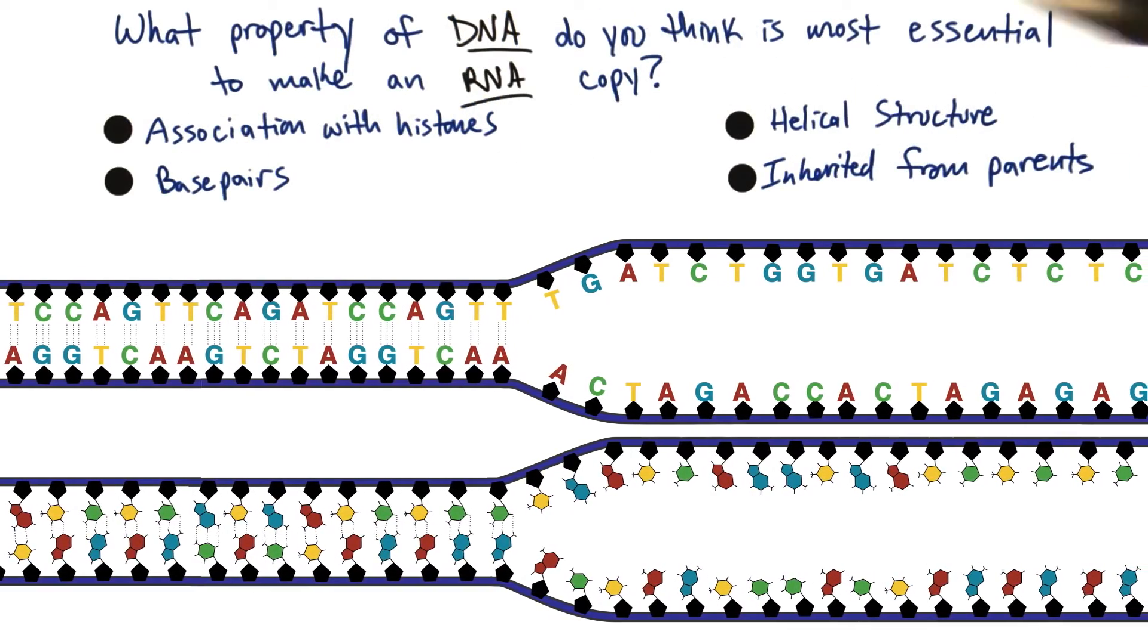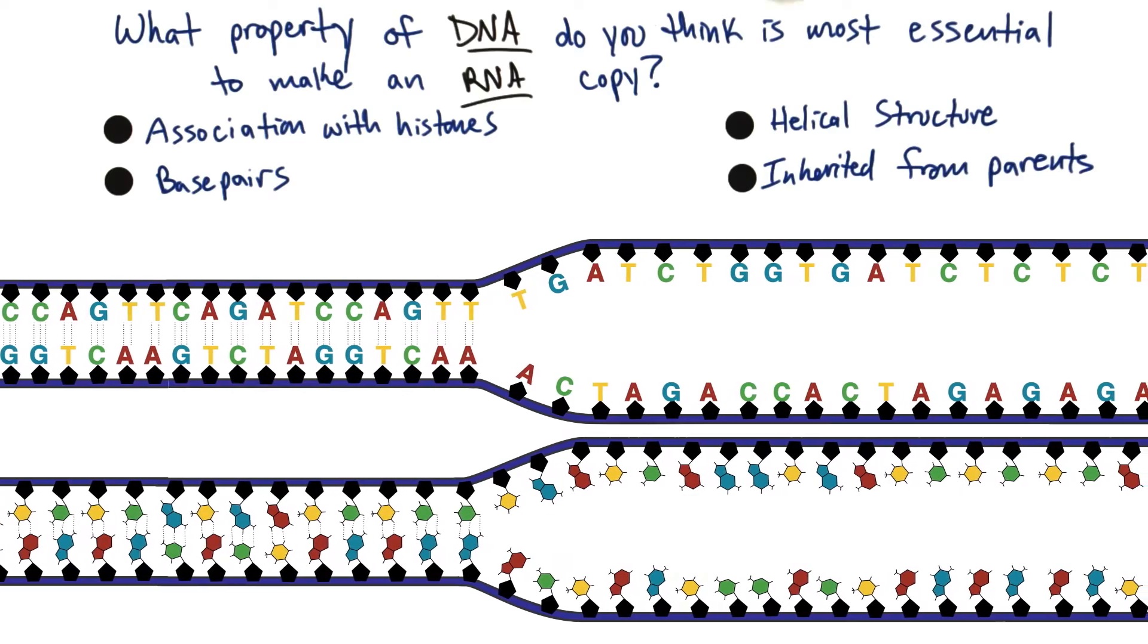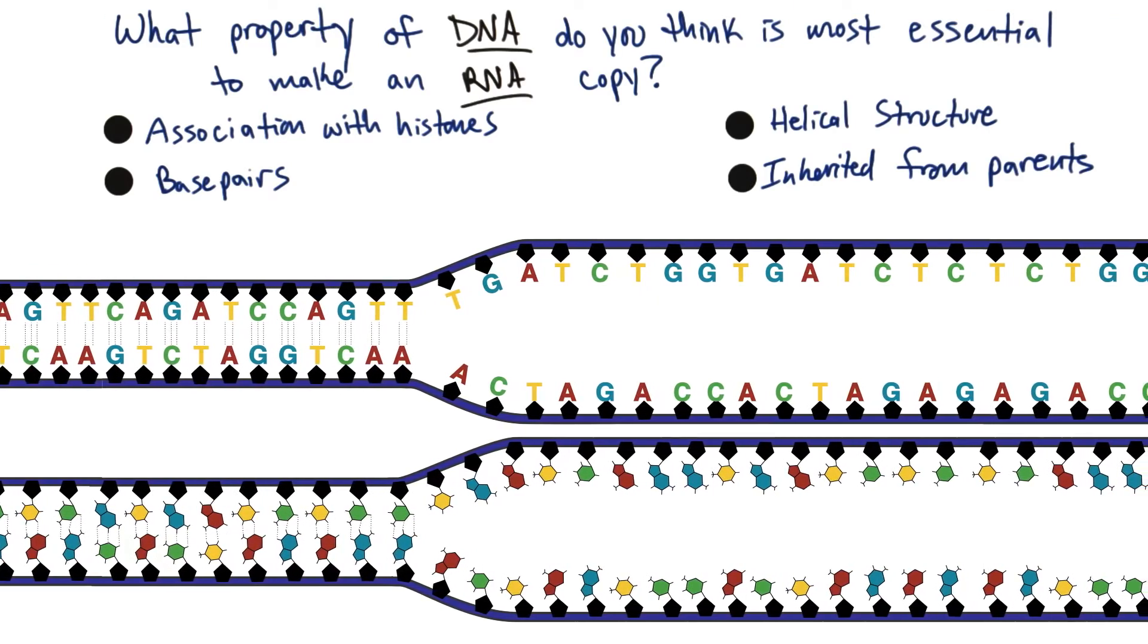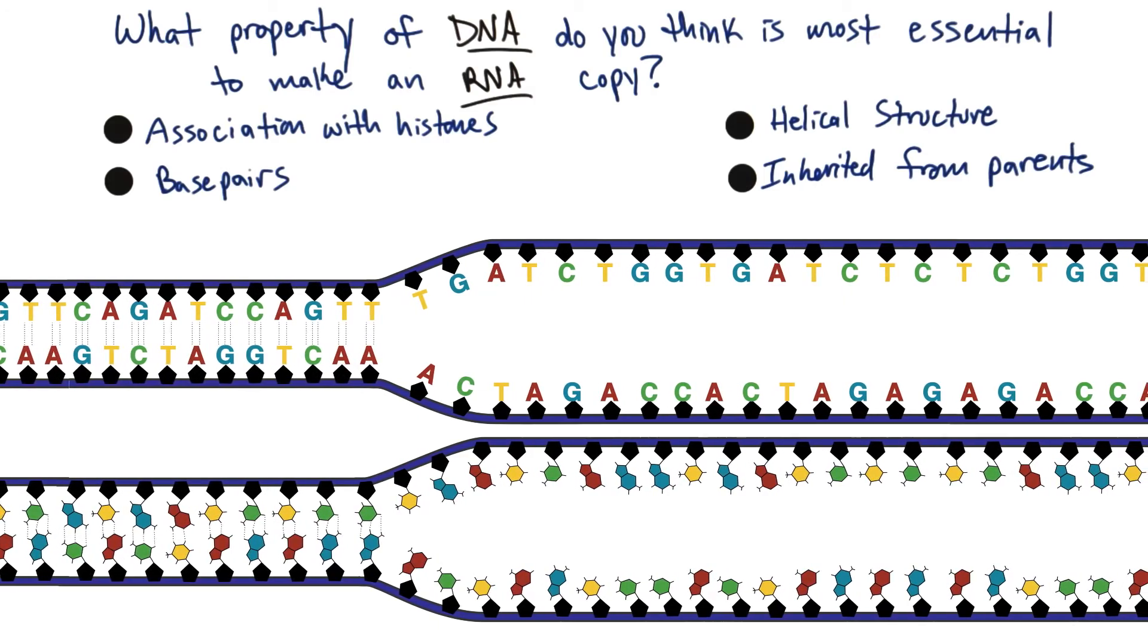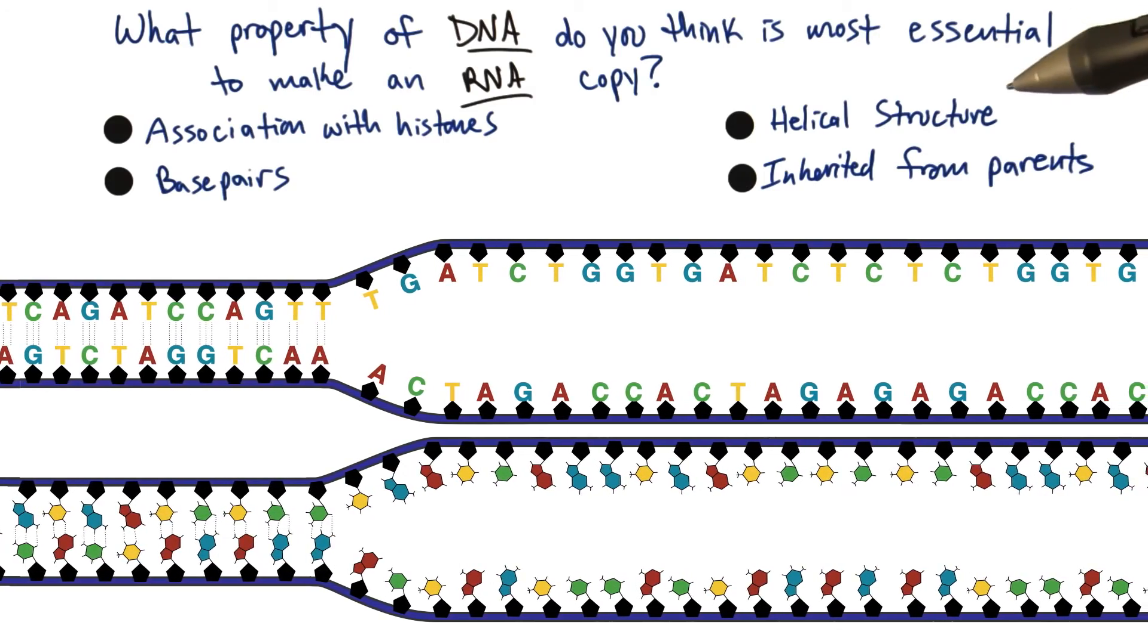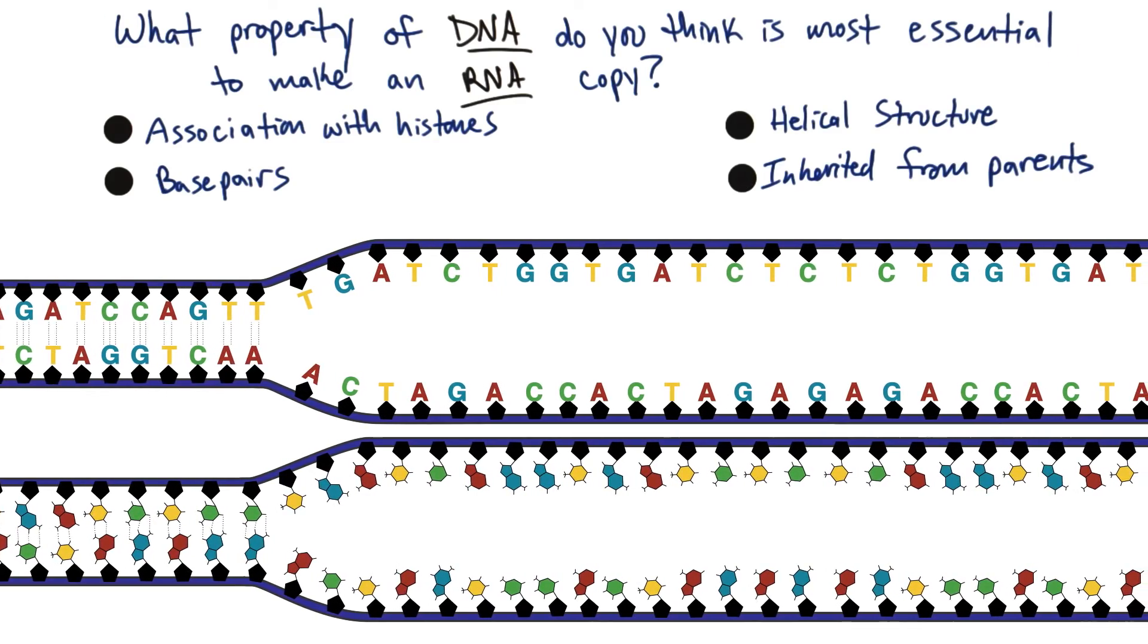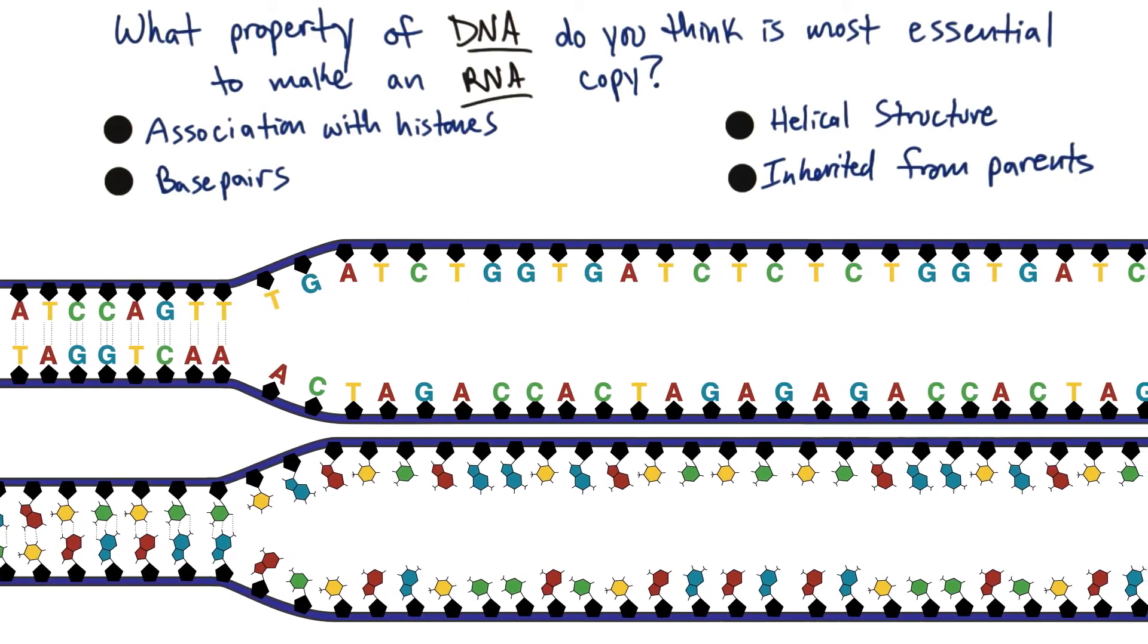So, I want you to see if you can tell me what property of DNA do you think is most essential to make an RNA copy? Do you think it's that DNA is able to associate with histones, that it can have a helical structure, the fact that it base pairs, or the fact that it's inherited from your parents? Go ahead and pick which answer you think is best.